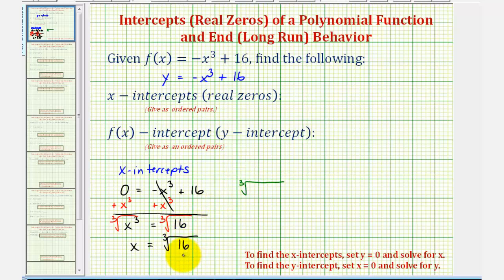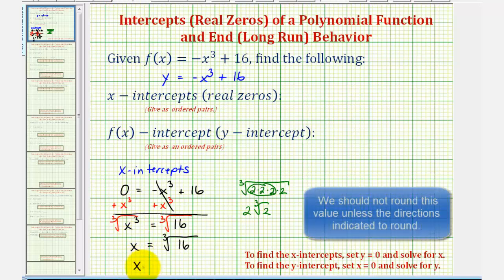If we look at the prime factorization of 16, 16 is equal to two times two times two times two. Notice how 16 does have a perfect cube factor, since here we have three factors of two. The cube root of two cubed would just be two, so we have two times the cube root of two, which would be the exact value of the x-intercept.